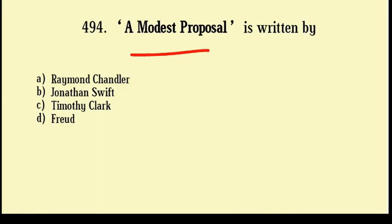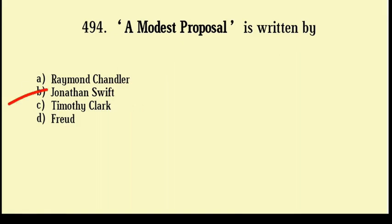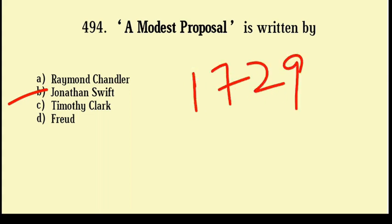A Modest Proposal is written by: Raymond Chandler, Jonathan Swift, Timothy Clarke, Froude. Correct answer: Option number B, Jonathan Swift. A Modest Proposal is a satirical essay written by Jonathan Swift and published in pamphlet form in 1729.